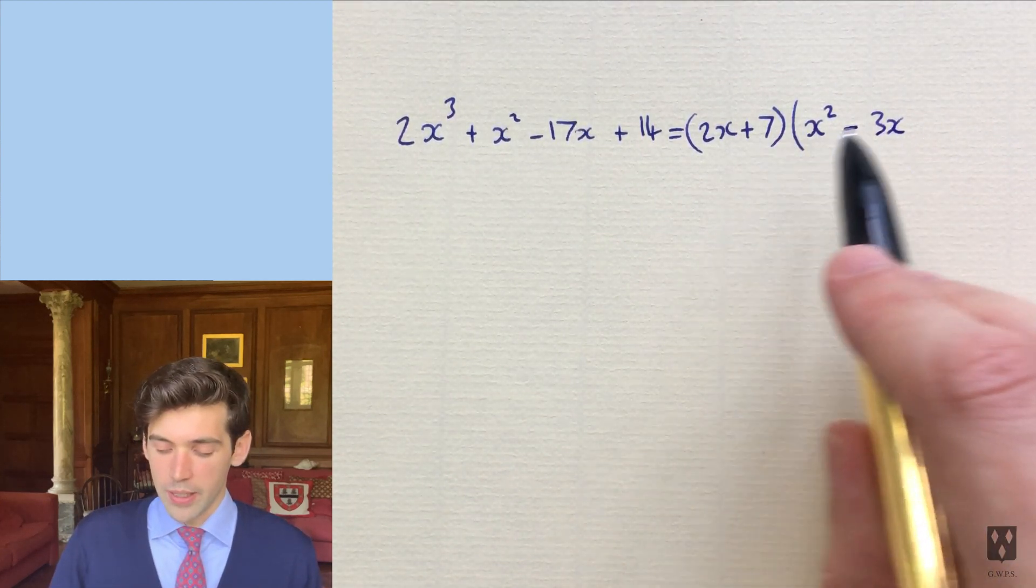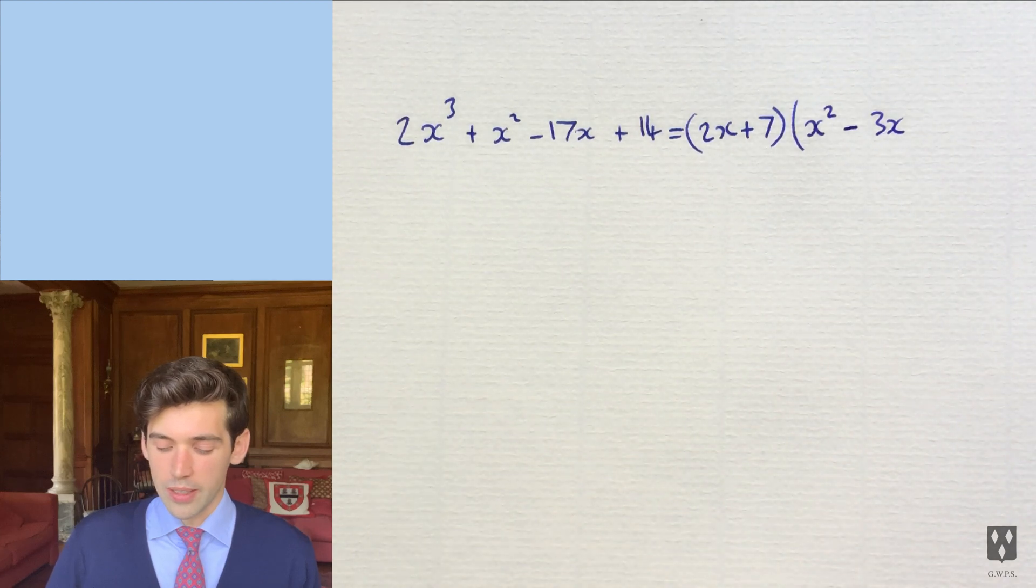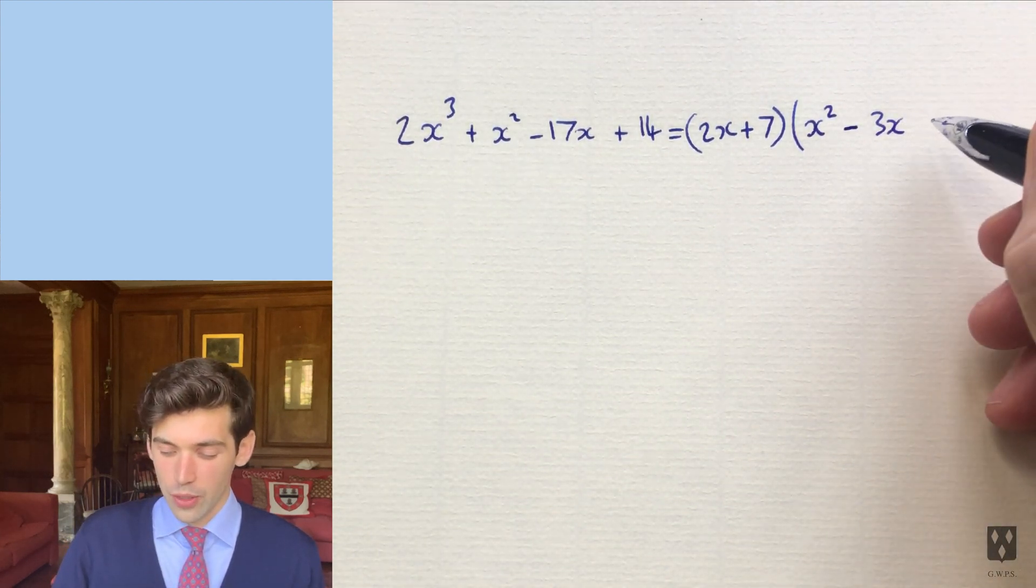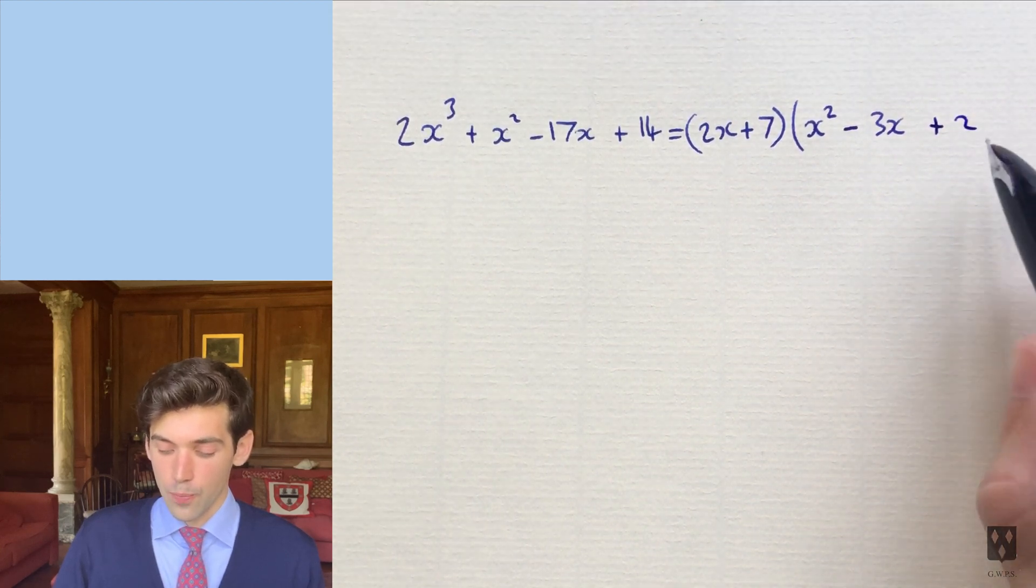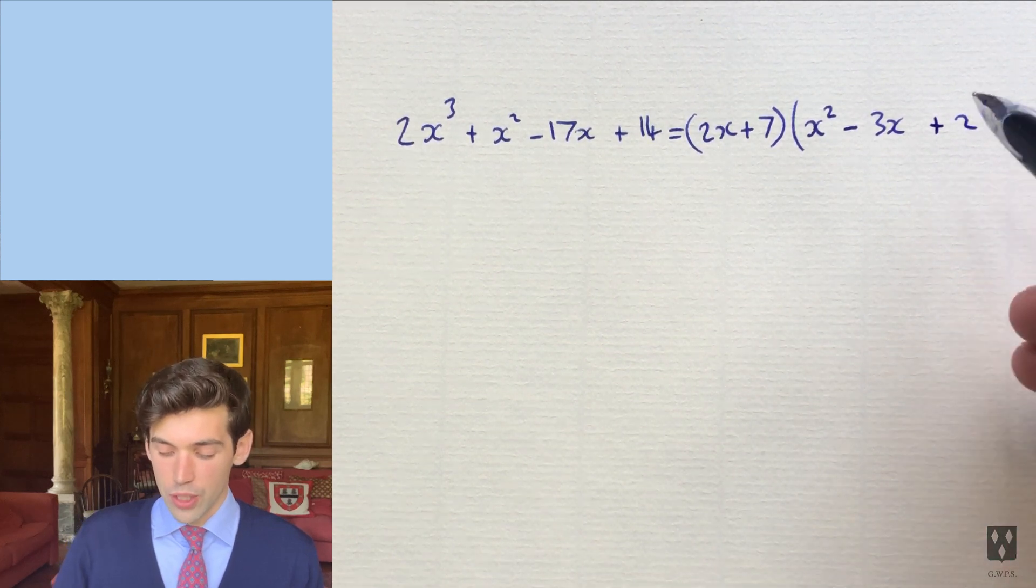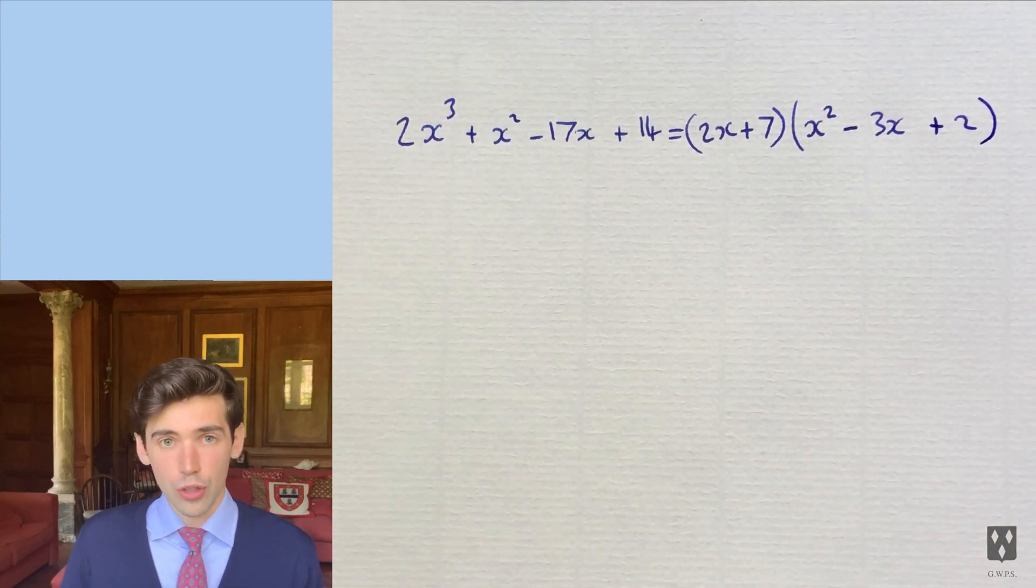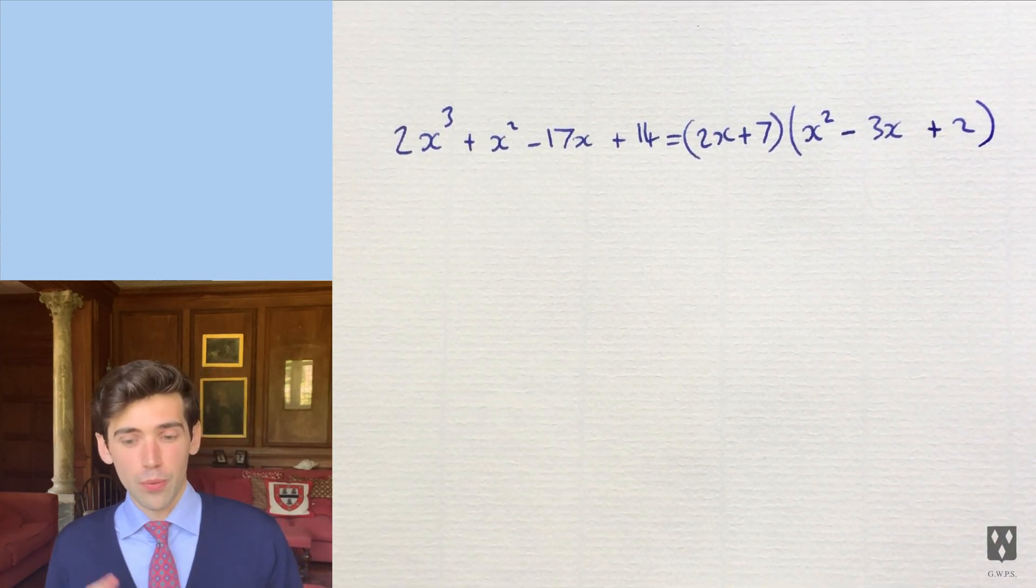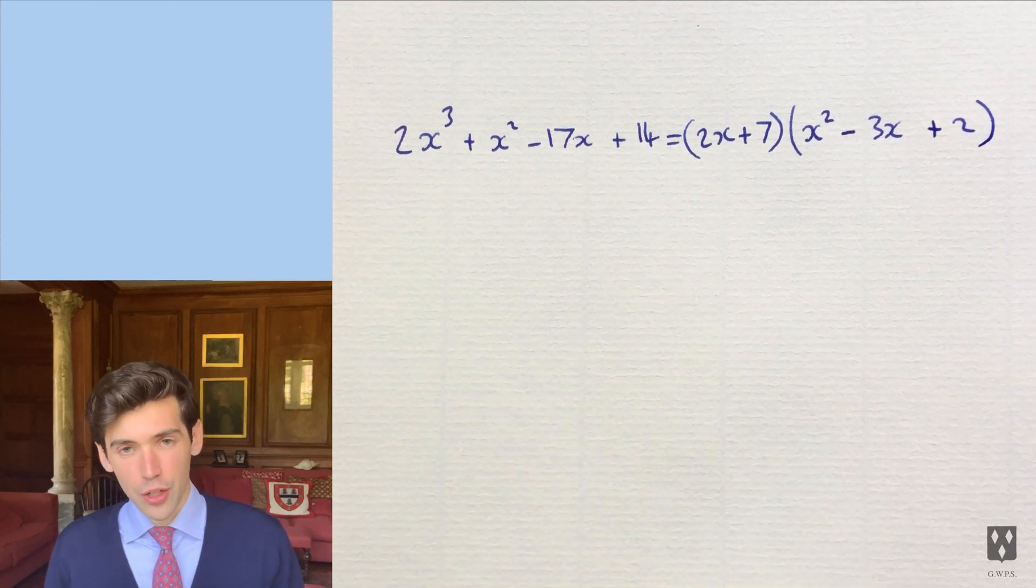Now, this gives us minus 21x, or minus 17. So we need to add on 4x. So we plus 2 to give us 4x from here. And that also gives us plus 14, which is what we wanted. So even ones like this, which look a little bit harder, you can actually still do using this method.